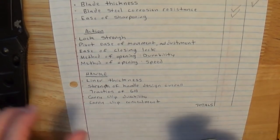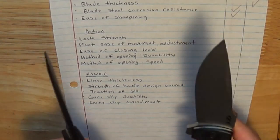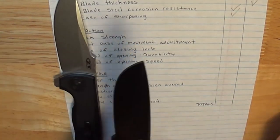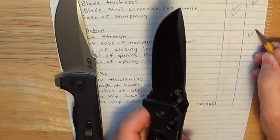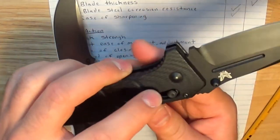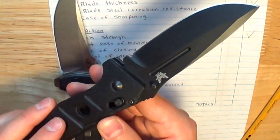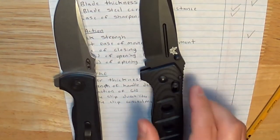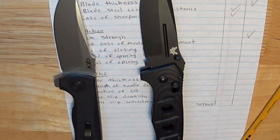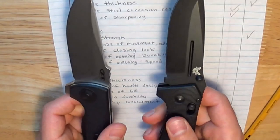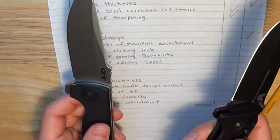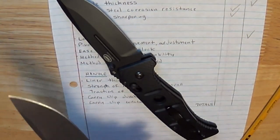Going to the action, lock strength, the axis lock I'm going to give the point to here. Axis locks are very strong. The only weakness is there are little springs in here called Omega springs. They're shaped like the Greek letter Omega, or similar to the English letter U. If those little springs break, you're sending your knife back to Benchmade for service, which is kind of a counter, because then you're out of knife.